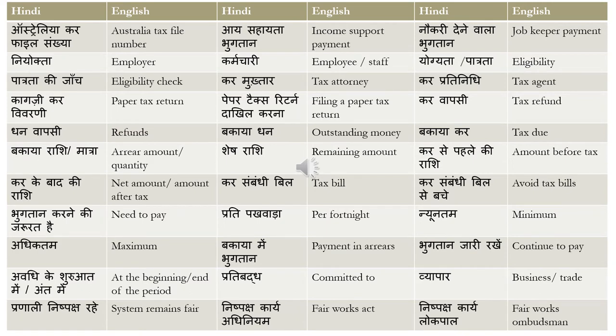The first word is 'Australia kar file sankhya' — that is, Australia tax file number. In Australia we have something called a TFN or tax file number, which is given to you by the ATO, the Australian Taxation Office. That phrase can be translated as 'Australia kar file sankhya.' Next, 'I sahayata bhutan' means income support payment — the Services Australia department pays income support to eligible employees.